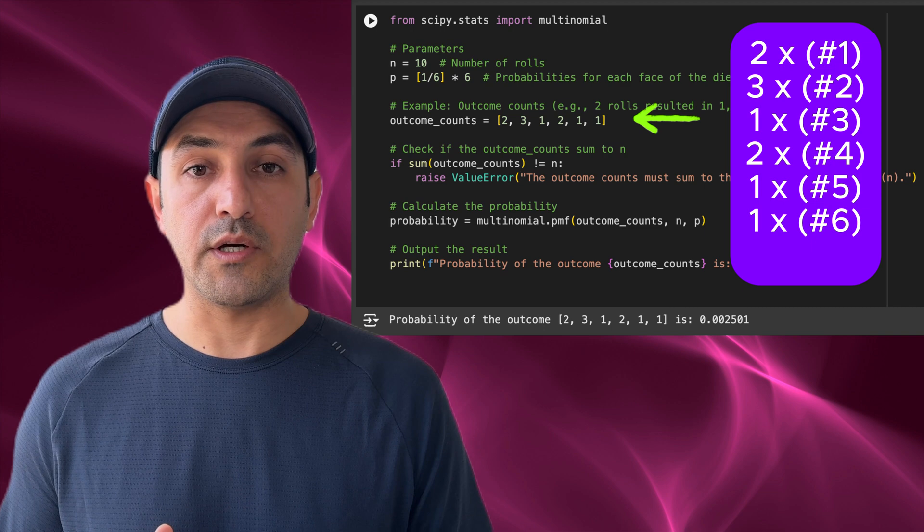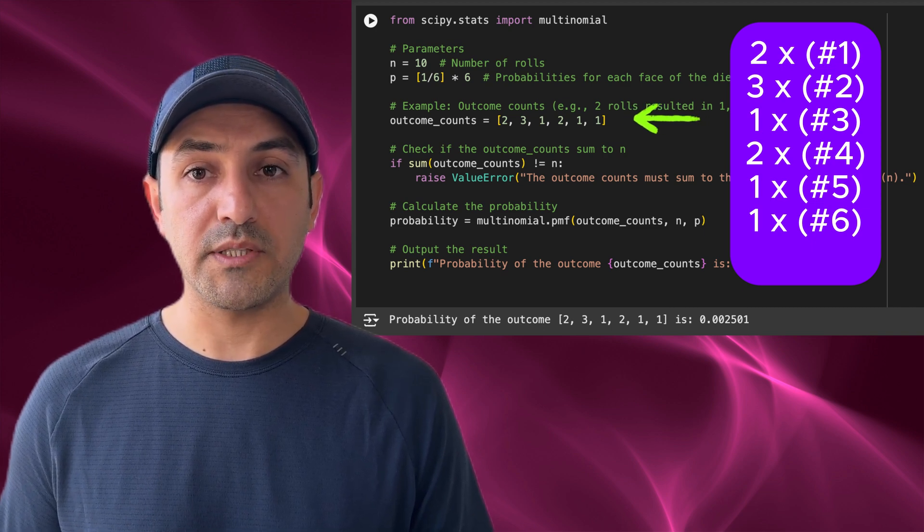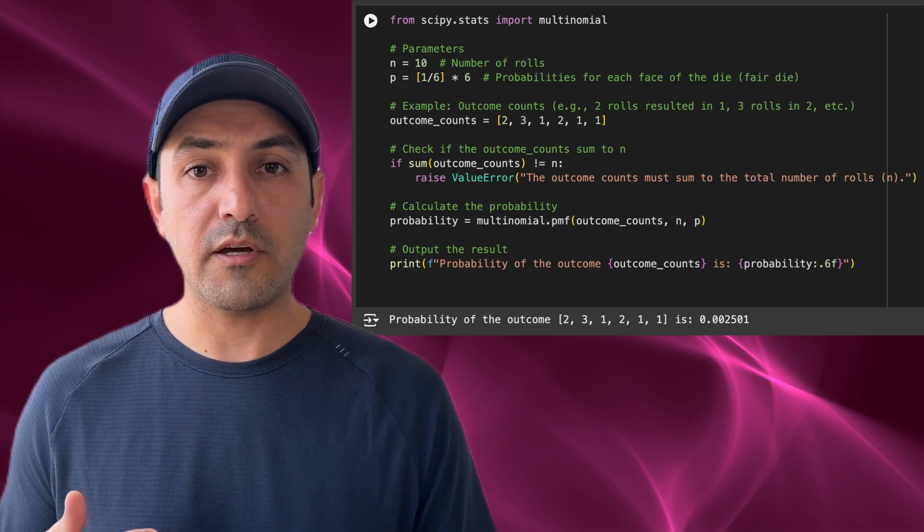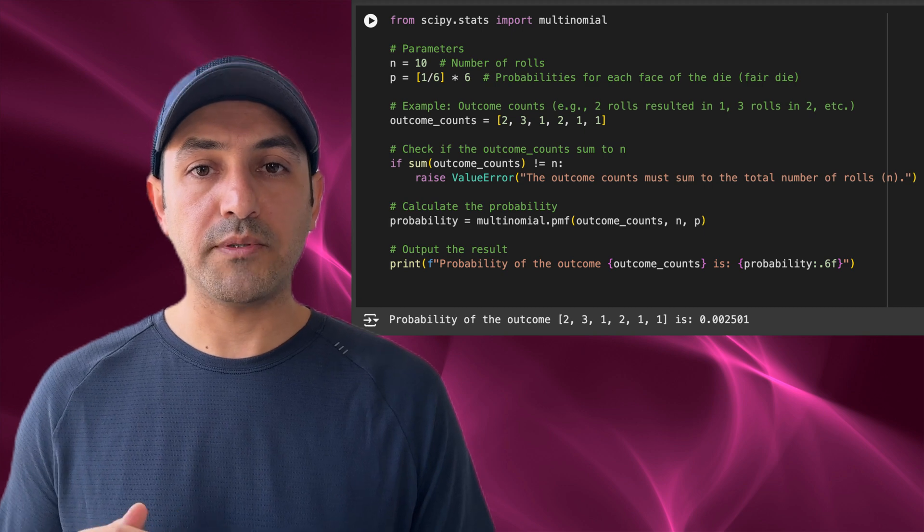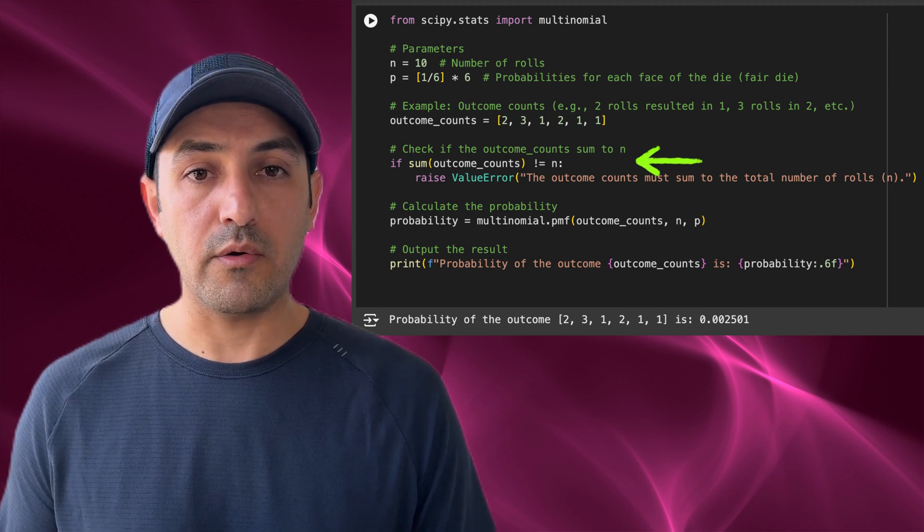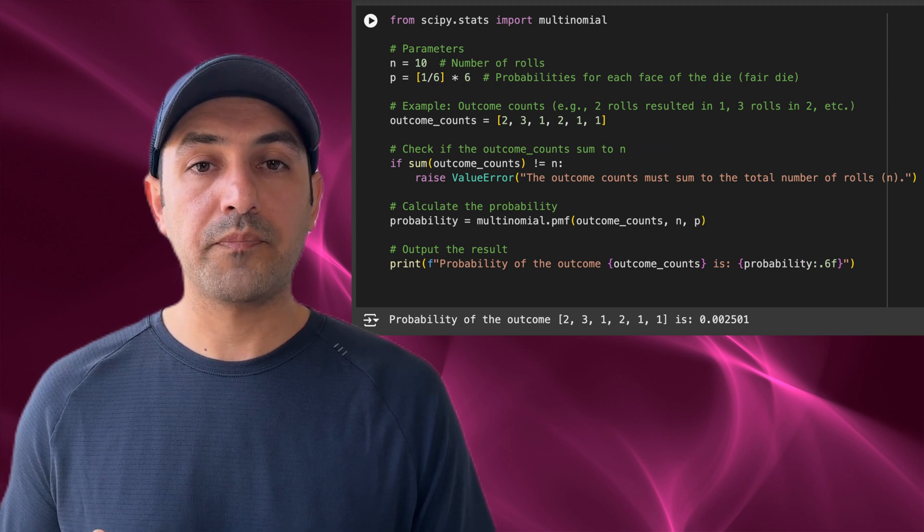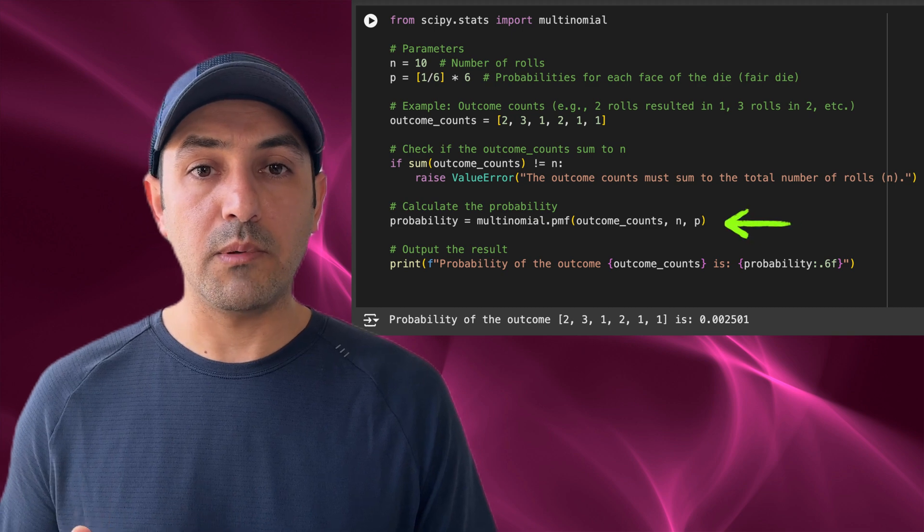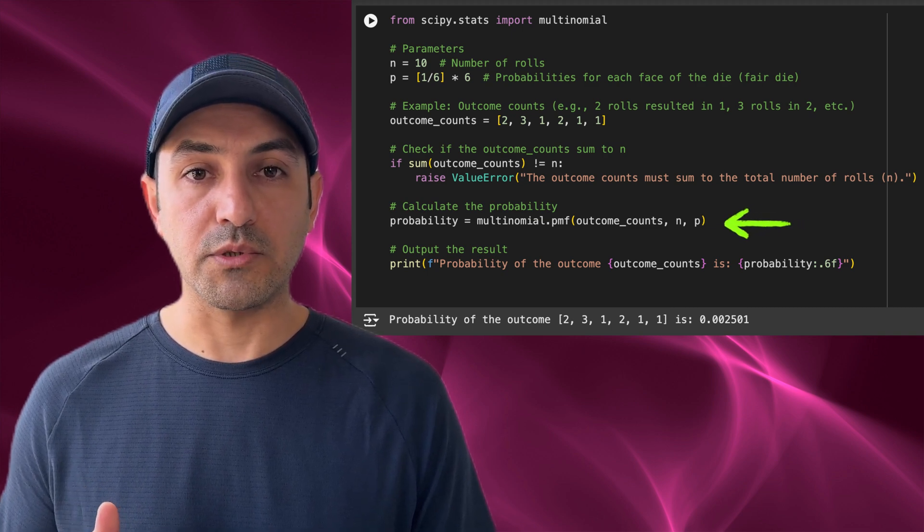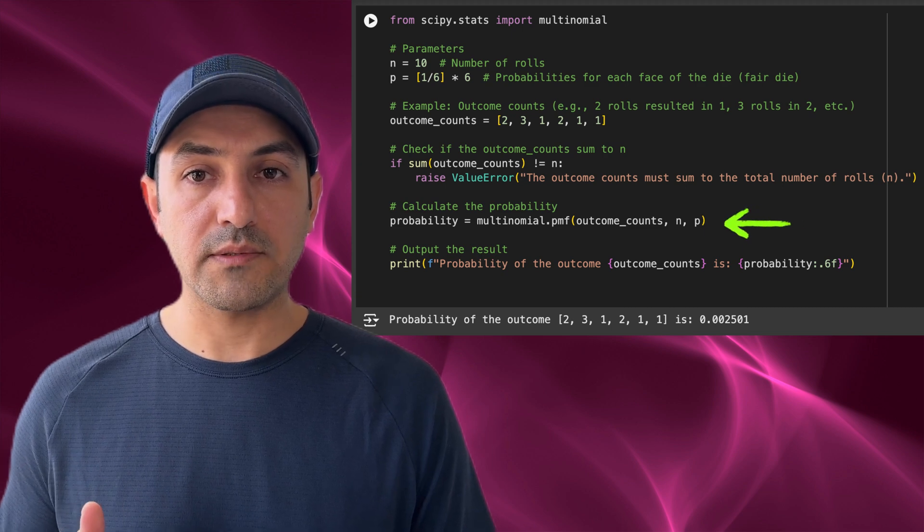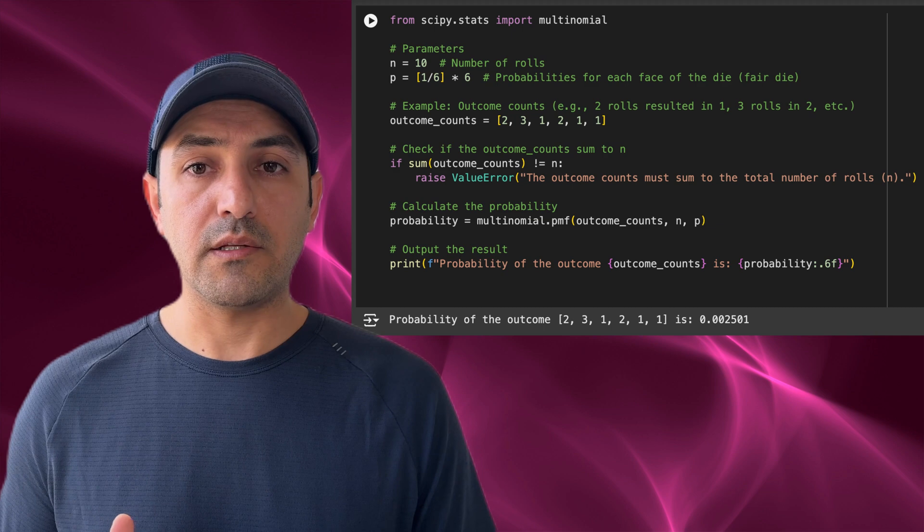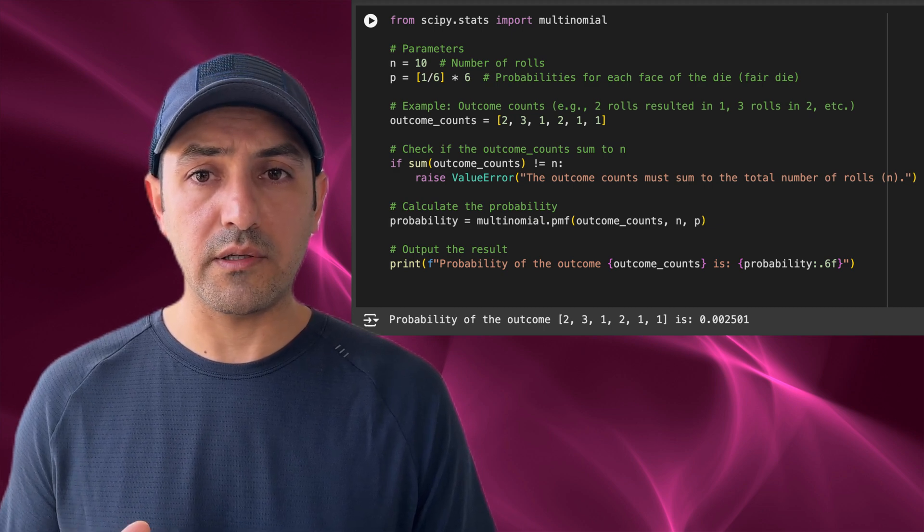Next we define the specific outcome of rolling the dice 10 times. For example, if the rolls resulted in the numbers 1, 2, 2, 6 appearing with the counts 2, 3, 1, 2, 1, 1, this array represents how many times each face appeared during the 10 rolls. Before proceeding, the code checks that the sum of these counts equals the total number of rolls n. If not, an error is raised because the outcome wouldn't make sense otherwise. After validating this input, we calculate the probability of observing this particular outcome using the pmf, or probability mass function, of the multinomial distribution. The pmf takes three arguments: the array of outcome counts, the total number of trials n, and the probabilities p of each category. It computes the chance of this specific outcome occurring under the given conditions.